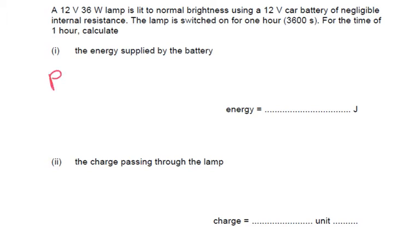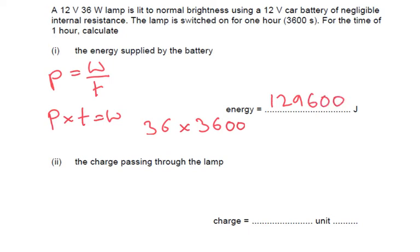Power is equal to work done over time. So power times by time is going to equal the work done or the energy supplied by the battery. So that's 36 multiplied by the time which is 3600. That's going to give us an answer of 129,600 joules.